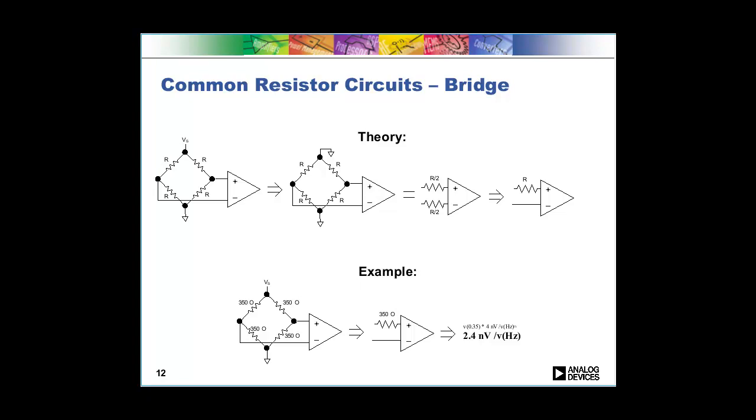In our example here, we have a 350 ohm bridge circuit, composed of four 350 ohm resistors. It just so happens that as you go through the noise analysis, and you ground the voltage sources, and then you figure out what can be in parallel and what you can add, it ends up that the noise of that bridge actually equals the noise of one of those resistors. So that's a handy little tip. For example, this 350 ohm bridge, when we do our square root of 0.35, so remember we do it in kiloohms, multiply that by 4, we get 2.4 nanovolts per root hertz.